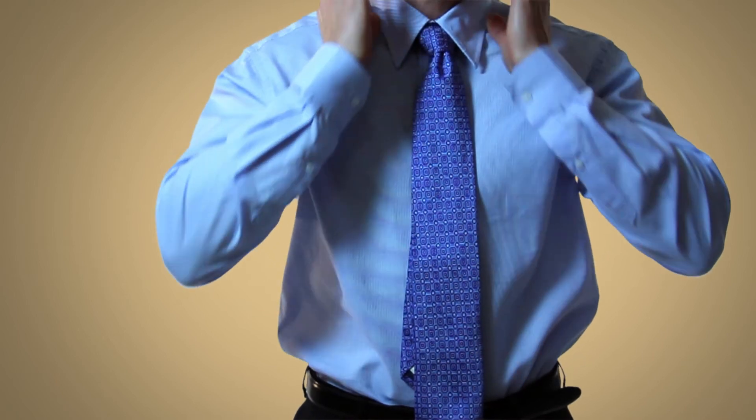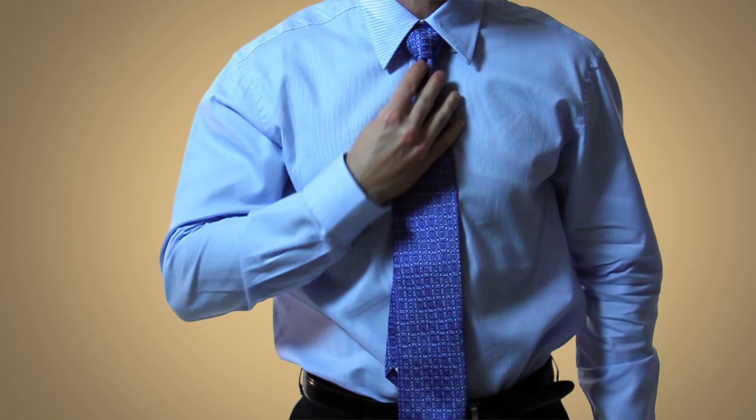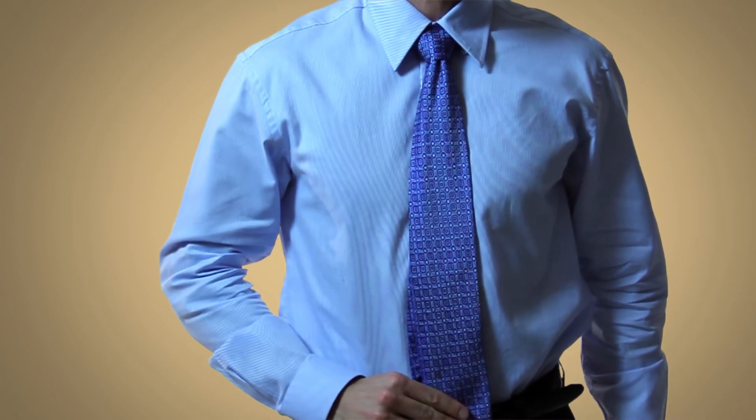You'll want to be sure that the knot is center and that it has a nice dimple. You can create a nice dimple by sticking your pointer finger in the middle of the tie knot and then pulling on it a little.